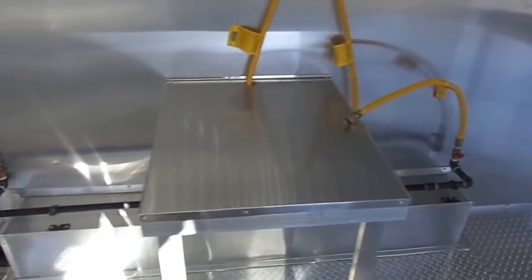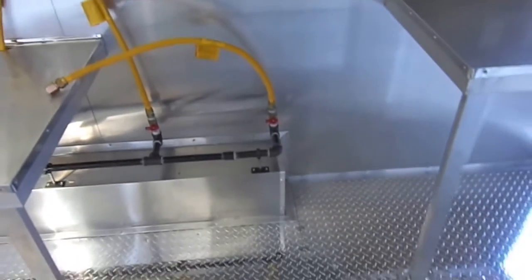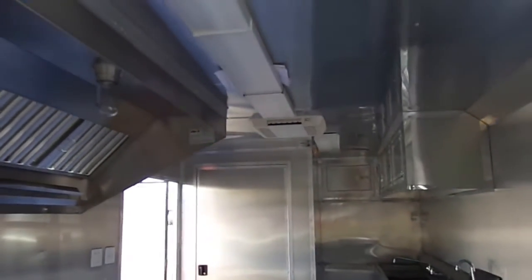There's a table for a charbroiler or griddle, and a spot for a couple fryers. This unit has two AC units.